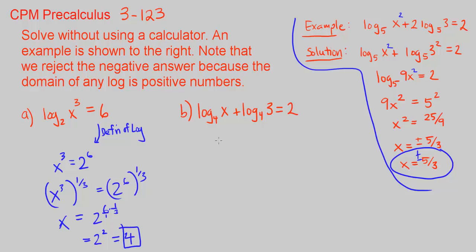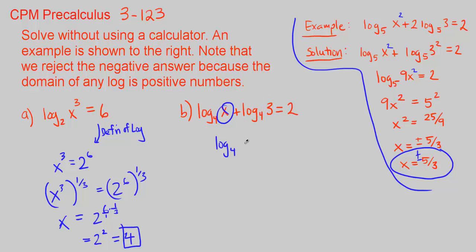For part B, we're adding two log base 4 terms, so we can combine them into one log base 4 by multiplying x and 3. That gives log base 4 of 3x equals 2. Rewriting in exponential form using the definition of a log, we get 3x equals 4 squared. Dividing both sides by 3, x equals 16 over 3.